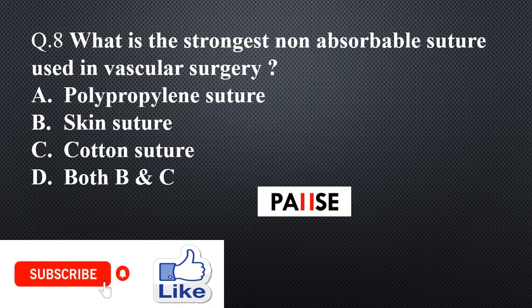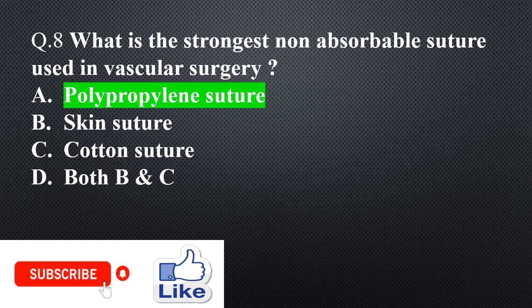Question 8. What is the strongest non-absorbable suture used in vascular surgery? Option A: Polypropylene suture, Option B: Skin suture, Option C: Cotton suture, Option D: Both B and C. The right answer is Option A: Polypropylene suture.